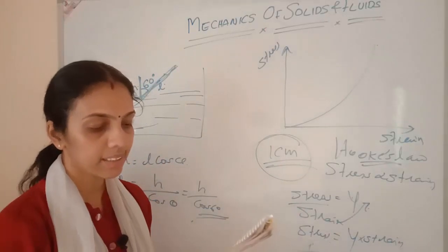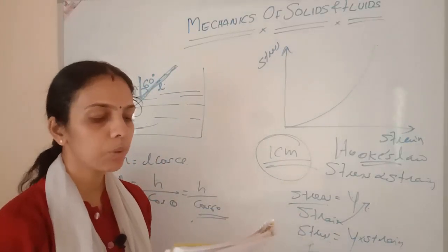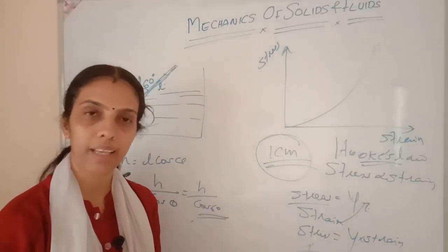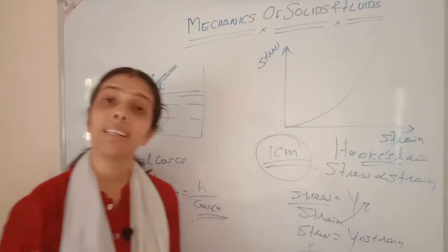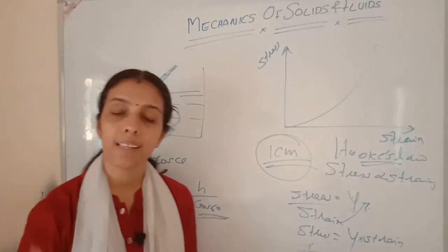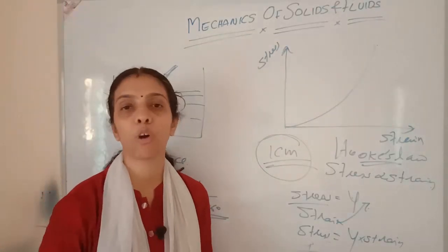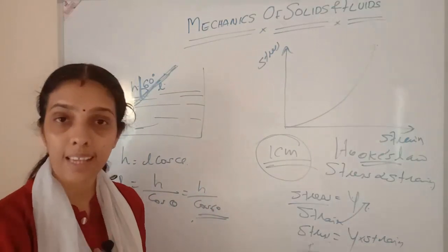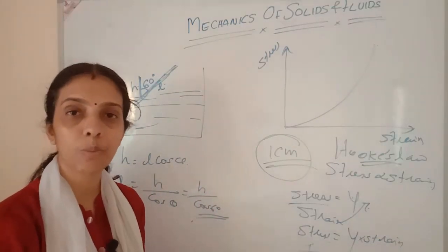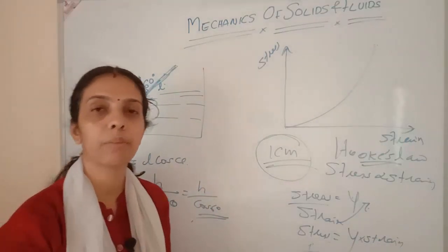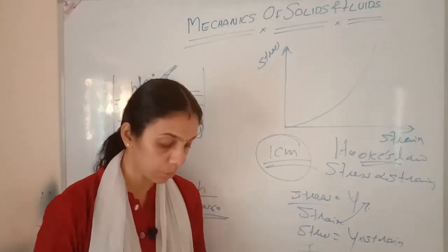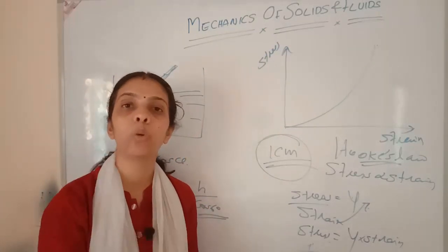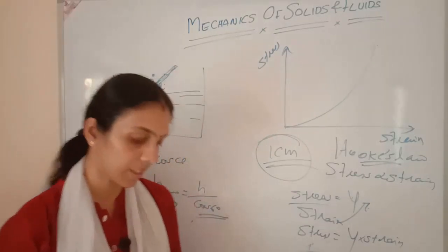Which is more elastic — steel or rubber? Steel is more elastic. Why? Because steel has a higher Young's modulus, so it resists deformation more. Steel is more elastic than rubber.